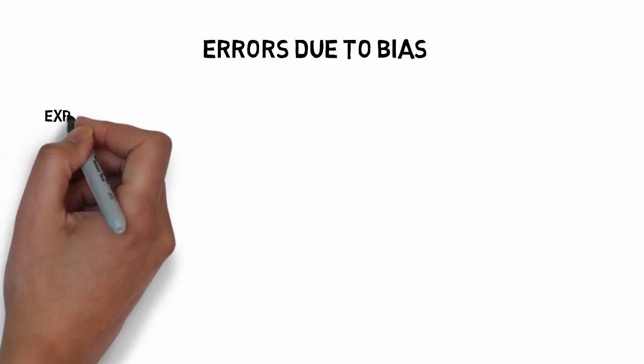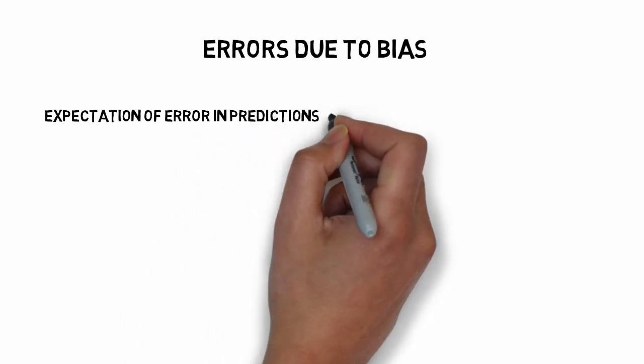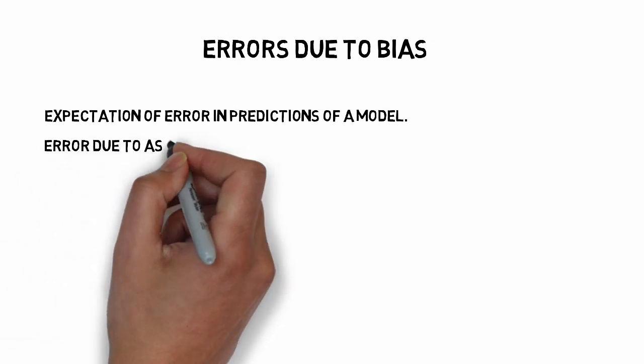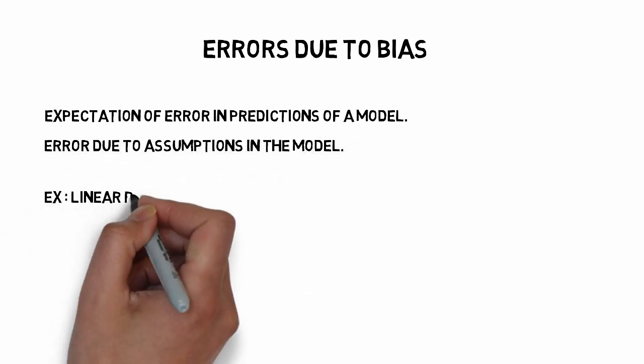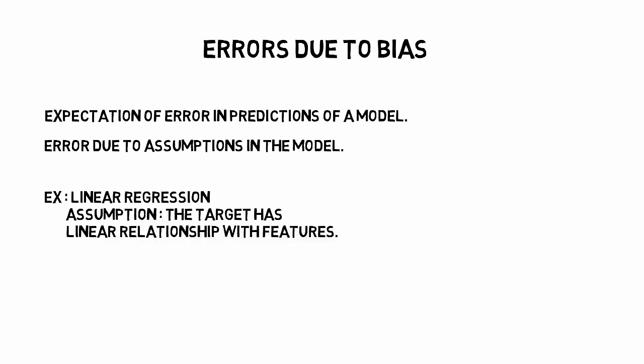So bias is mathematically the expected error in the predictions of a model. It can be simply understood as errors which we make due to assumptions in the model. For example, when we try to solve a problem by applying linear regression to it,